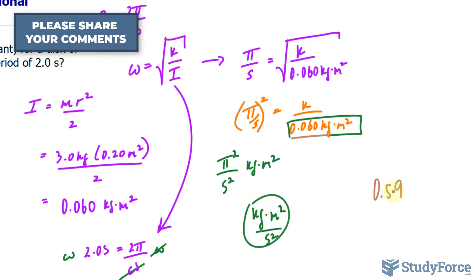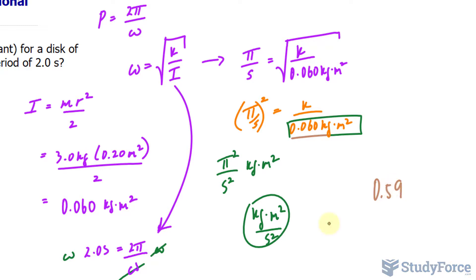Those are the units for the torsional constant 0.59. But because torque has the units newtons times meters, we can separate this, where I have kilograms times meters times meters per second squared. This part right here represents newtons. That's one newton. And that is times meters. So, it's better to represent it as newtons times meters.